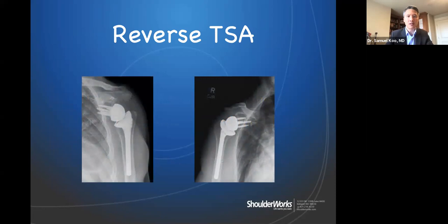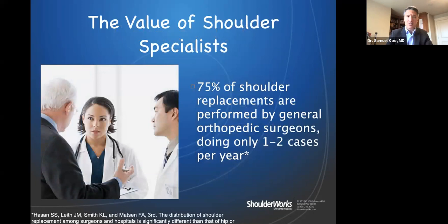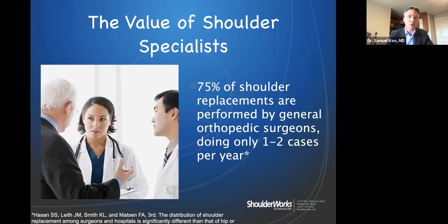Before we had reverse total shoulder technology, people without rotator cuff function, with bone loss, or with failed total shoulders really didn't have good solutions. The surgery itself takes about an hour to an hour and a half, is done as an outpatient procedure, and because of the prosthesis configuration, rehab tends to be quicker compared to a regular total shoulder replacement.